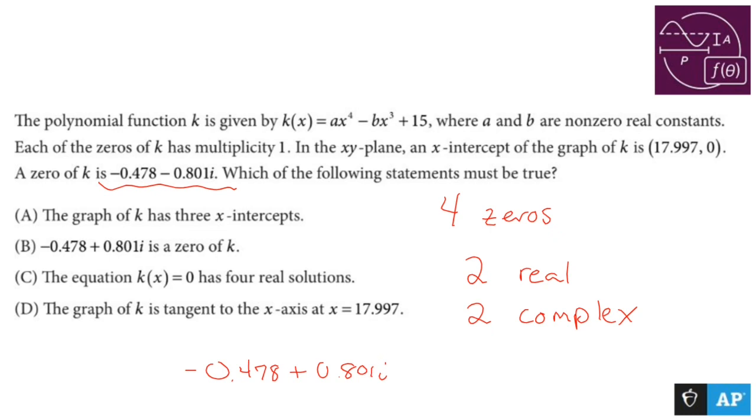Okay, so the fact that is saying the graph of k has three x-intercepts. That's impossible if it's a quartic. We're either going to have 2 or 4 or none. That is a zero of k. Oh, I think I just wrote you out.